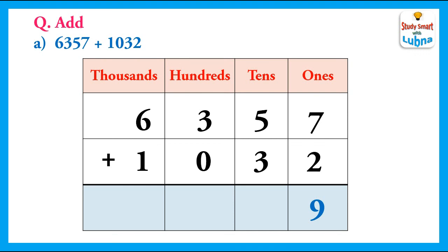We will add the tens. 5 plus 3 equals 8. We write 8 in the tens column. Next, we will add the hundreds. 3 plus 0 equals 3. We will write 3 in the hundreds column. After this, we will add the thousands. 6 plus 1 equals 7. We will write 7 in the thousands column. So, the answer is 7389.